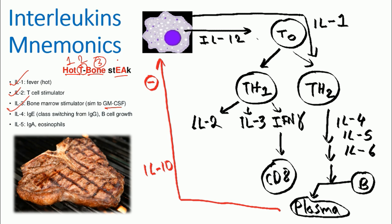Now the fourth one is E. E is IgE or immunoglobulin E. It helps in the class switching from IgG for the B cell growth. It also helps the B cell growth. And the fifth interleukin is A. So A is linked with IgA or immunoglobulin A or eosinophils. So the activation of eosinophils and the influencing B cells to produce IgA antibody.